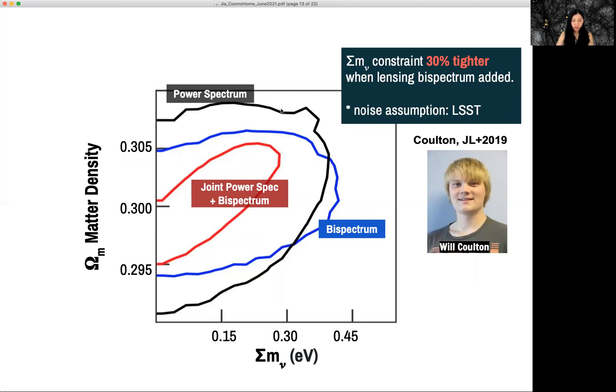The power spectrum will give us this black contour. Bi-spectrum give us the blue contour. On its own, bi-spectrum is very similar in constraining power than the power spectrum.